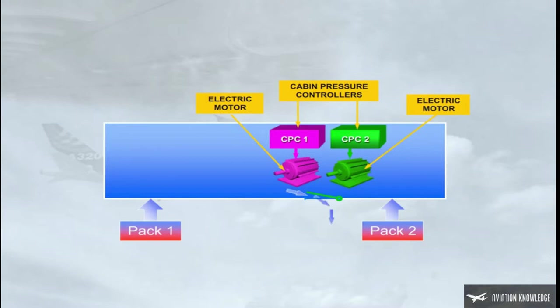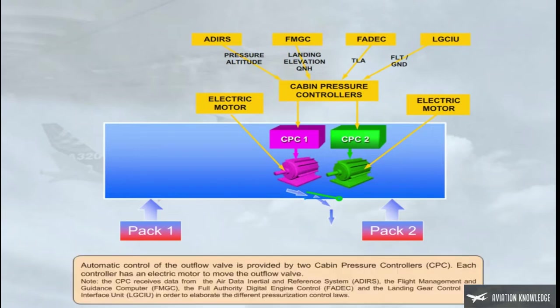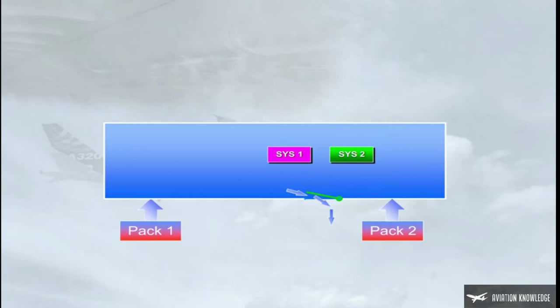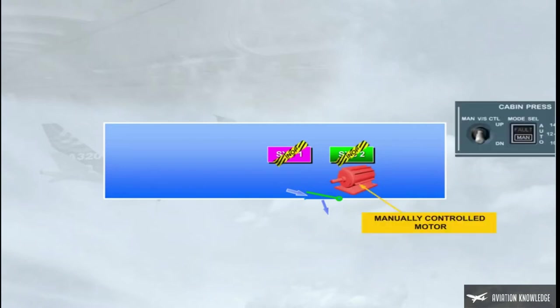The CPC receives data from the air data inertial and reference system, the flight management and guidance computer, the full authority digital engine control, and the landing gear control and interface unit, in order to elaborate the different pressurization control laws. The controller-motor combination is known as a system. Only one system will operate at any one time, with the other acting as backup. A third motor is installed for use in the event of both automatic systems failing, and requires a manual input to open or close the outflow valve.